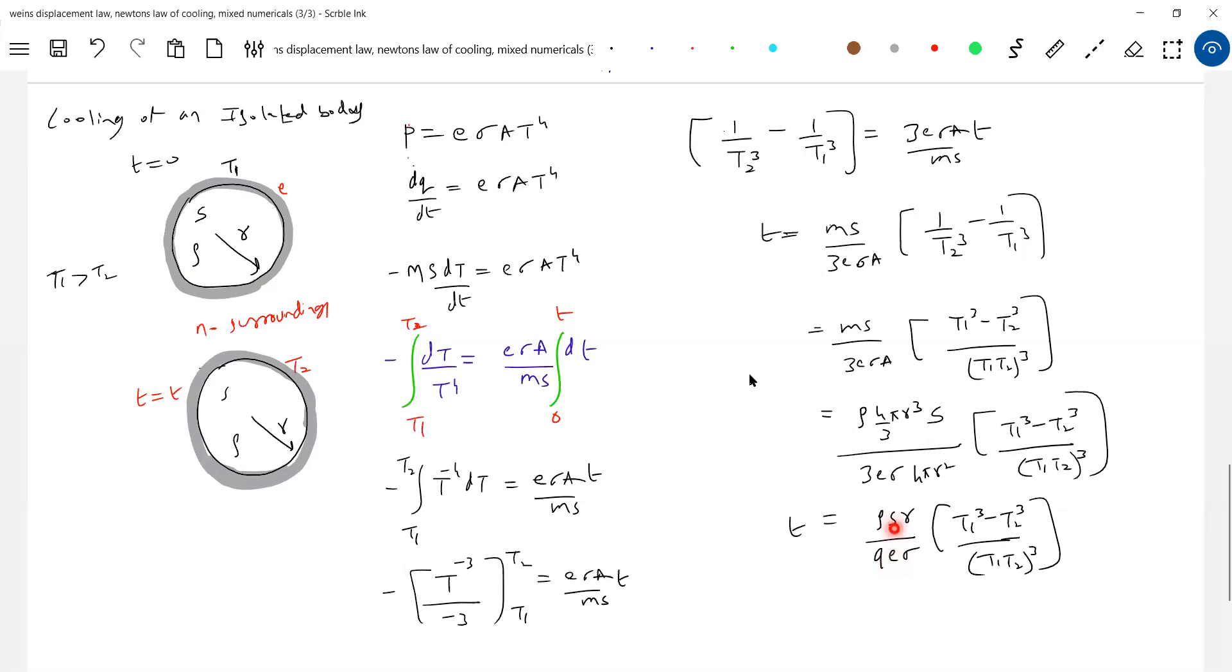If specific heat is more, then takes more time. Density is more, takes more time. If r is more, if r increases, surface area increases, then what happens? It will take more time. Sigma is a constant, don't bother. So what is the type of surface? It matters - the material and the shape. So you have questions if a body cools down, the time taken depends on the material, shape, and type of surface.